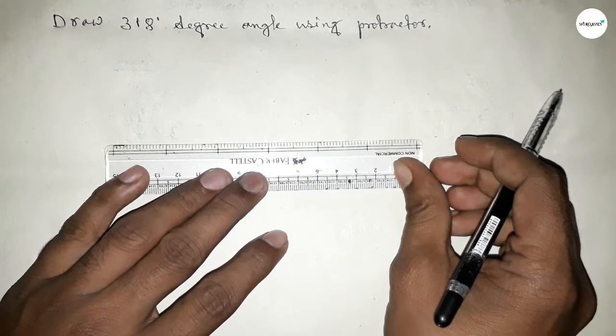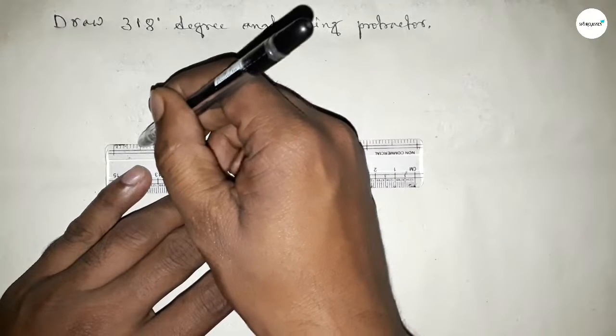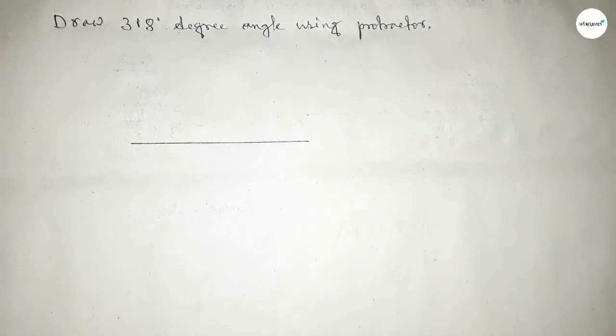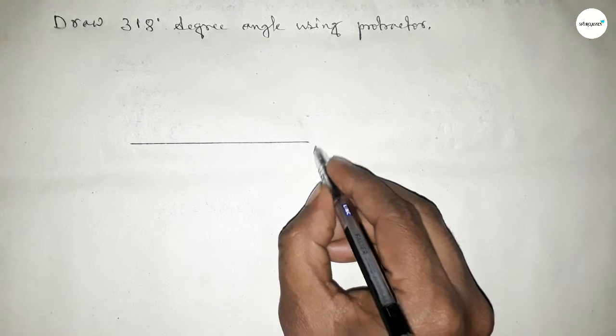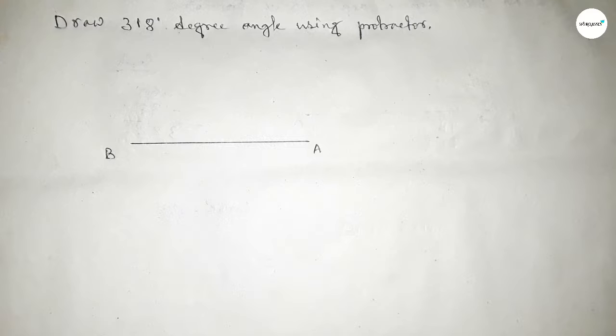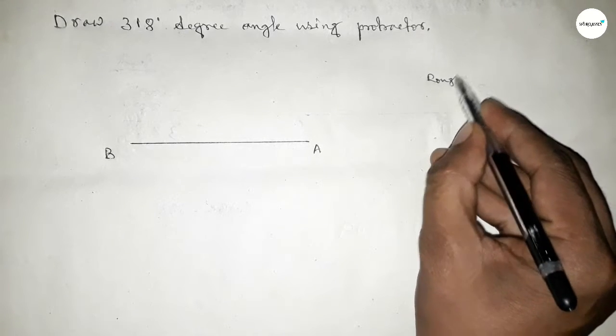So let's start the video. First of all, drawing here a straight line of any length. Next, taking here this is point A and this side point B.